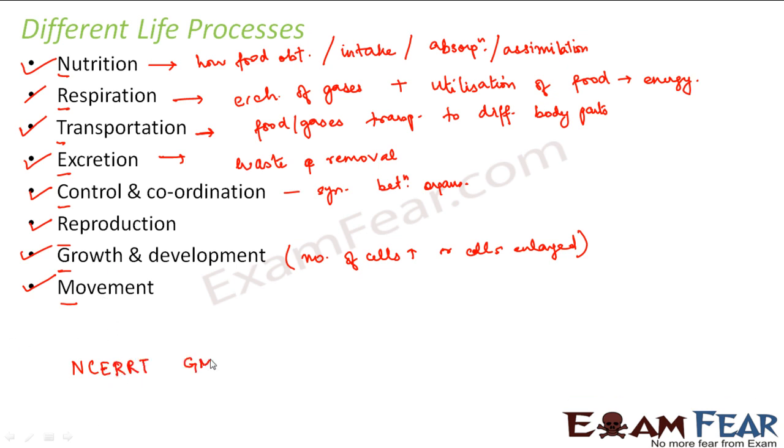NCRTGM. So this is an abbreviation of the first term. So NCRTGM. N is for nutrition. C is for control and coordination. E for excretion. R for respiration. R for reproduction. T for transportation. G for growth. And M for movement. So you can remember this NCRTGM. So with this you can remember the name of the different life processes.